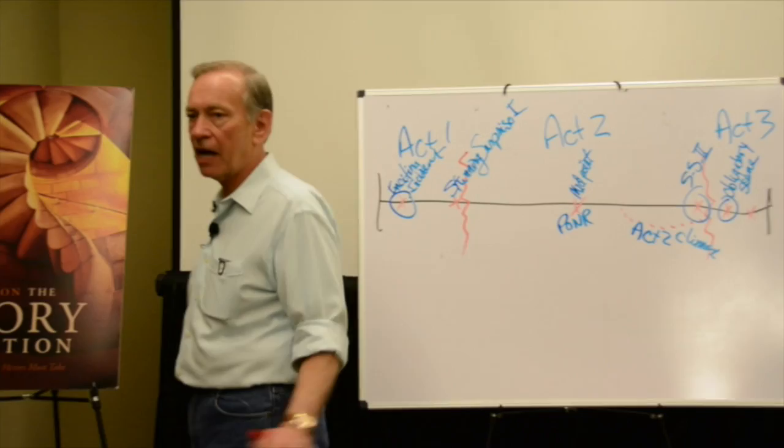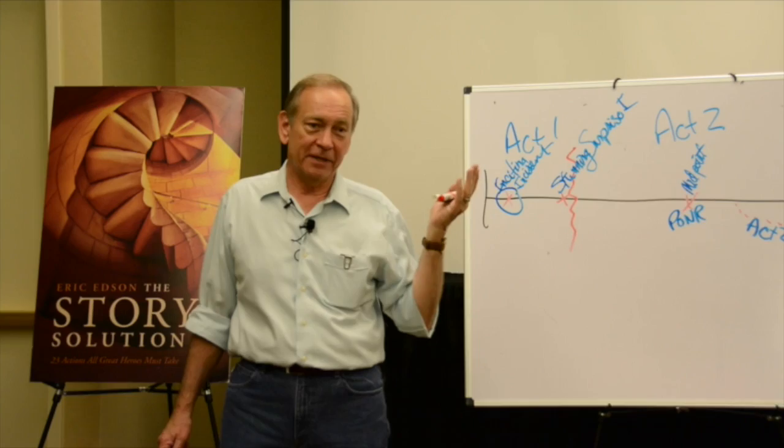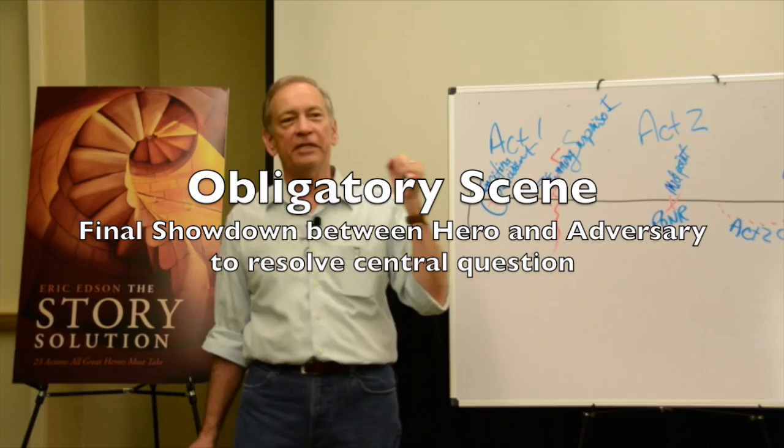And this is why your adversary has to be a human being, and they have to be a very strong human being. Look at Maximus and Commodus. This, mano a mano, hand to hand, one will kill the other to decide the dramatic question of the story once and for all.